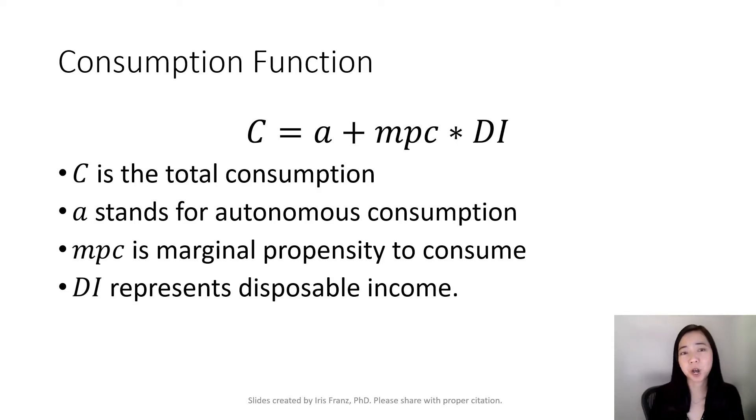Next we're going to talk about the consumption function. The consumption function or the consumption schedule is C equals A plus MPC times DI. Here the capital C is the total consumption. A, the small a, stands for autonomous consumption. MPC is our marginal propensity to consume, and DI is the disposable income.